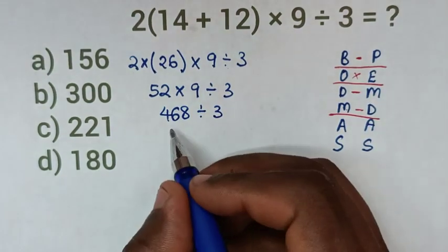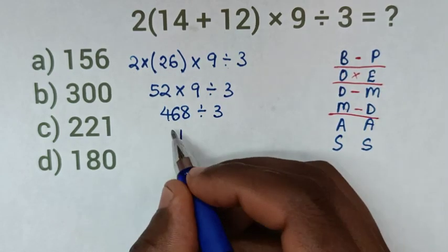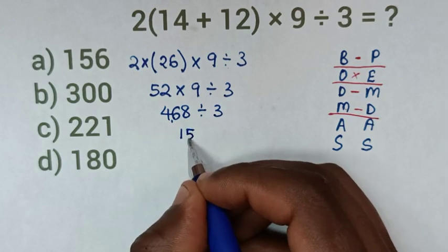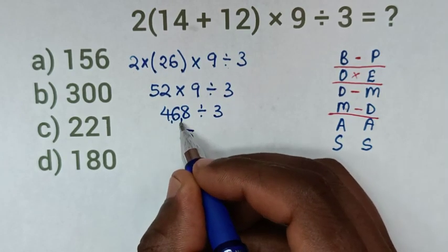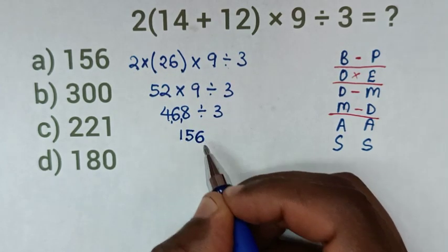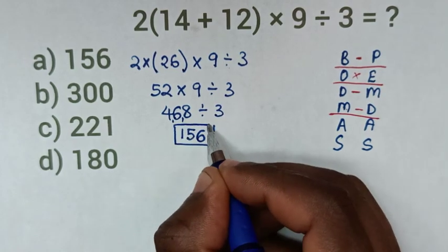In the next step, we divide. 4 ÷ 3 is 1, carry 1. 16 ÷ 3 is 5, carry 1. 18 ÷ 3 is 6. So, 156 is the correct answer.